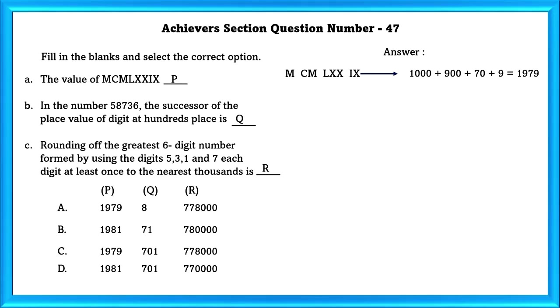B: In the given number 58,736, the successor of the place value of digit at 100th place is? The place value of digit at 100th place is 700 and its successor is 701.